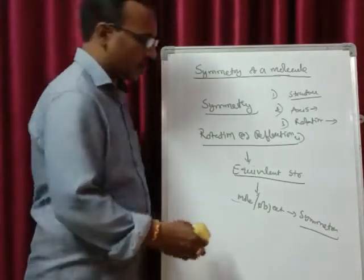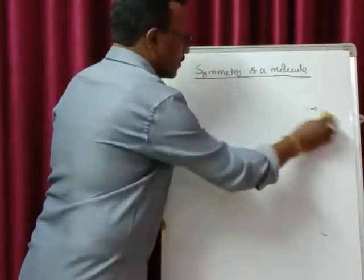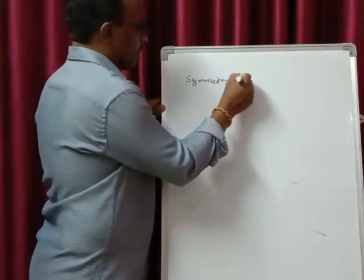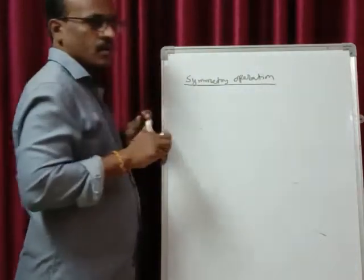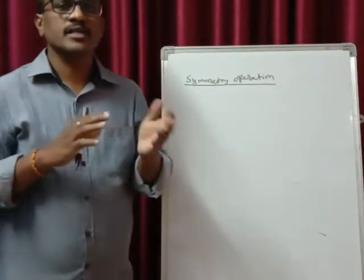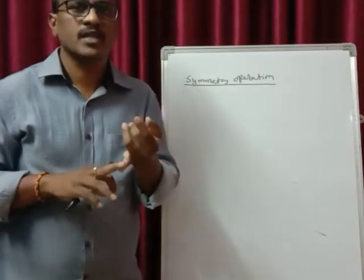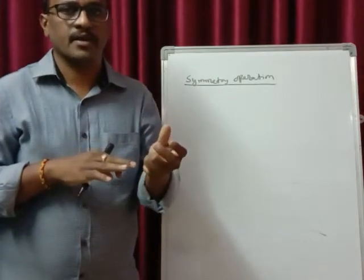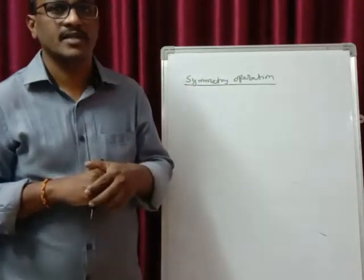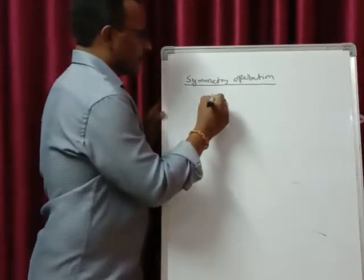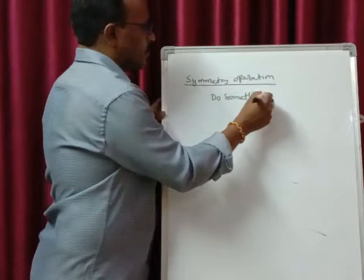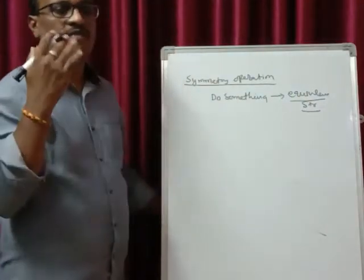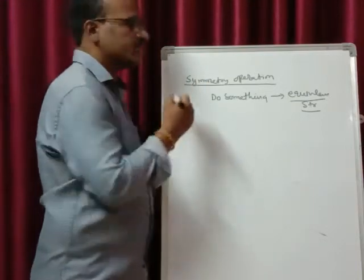Now let us take some definitions. Symmetry operation — what is symmetry operation? It is doing something on a molecule, that is, doing rotation or reflection along a particular axis or through a particular plane. If it is giving you an equivalent structure, then this entire process is called a symmetry operation. Doing something to a molecule such that it gives you an equivalent structure — that process we call symmetry operation.